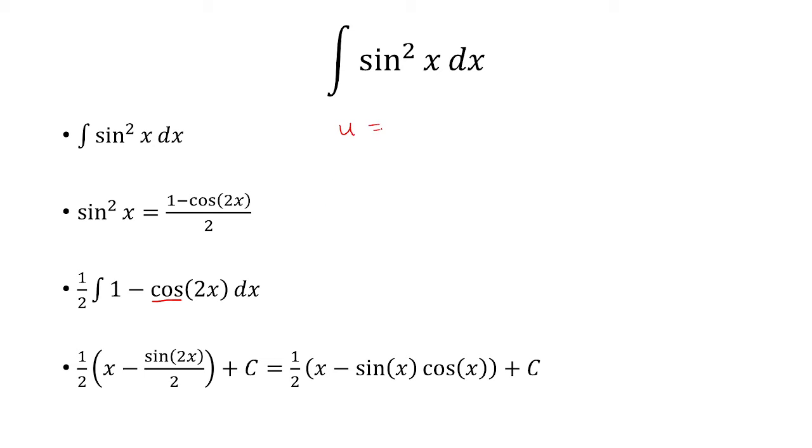If you want, you could have done let u equal 2x, so du will be 2 dx. So if we go back here, 1 minus cosine u, and then du is 2 dx, or dx is du over 2. So that's going to be out here, the 1 half.